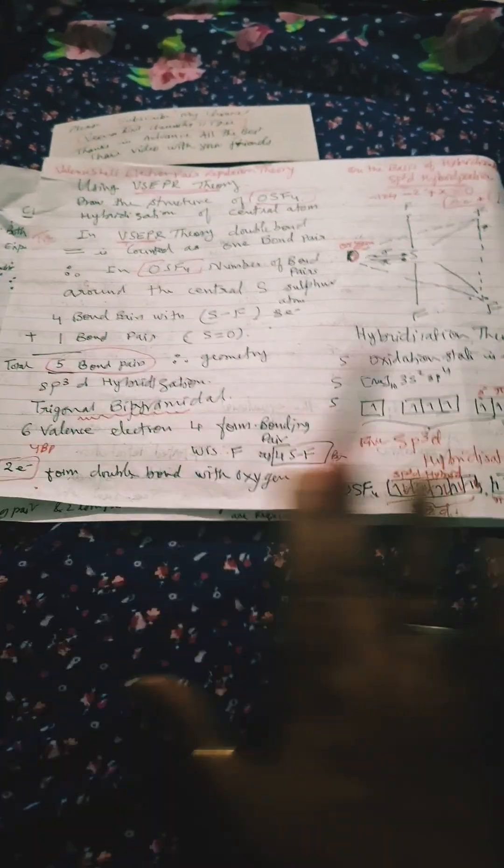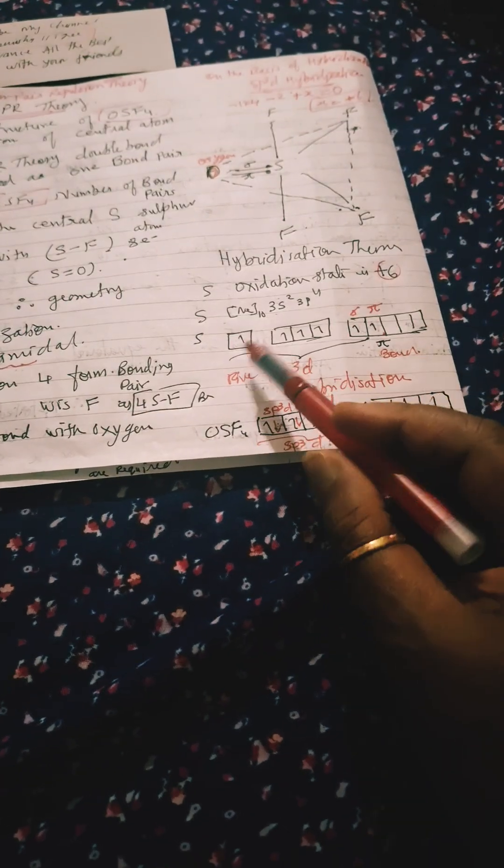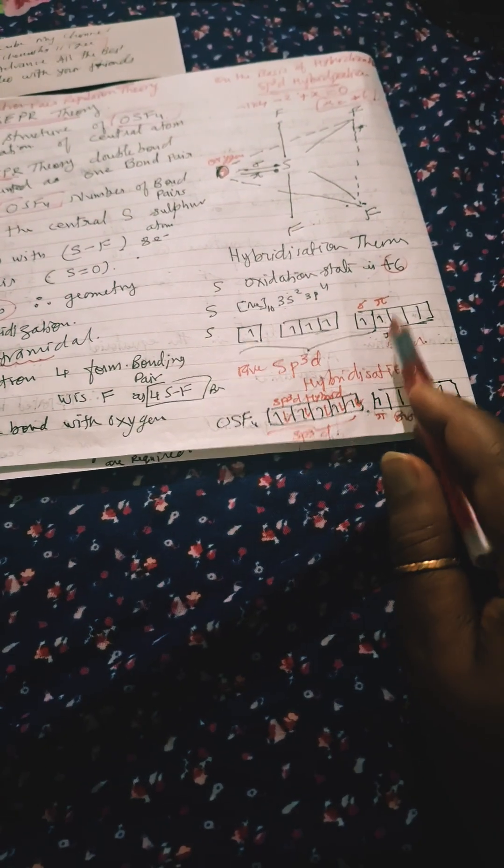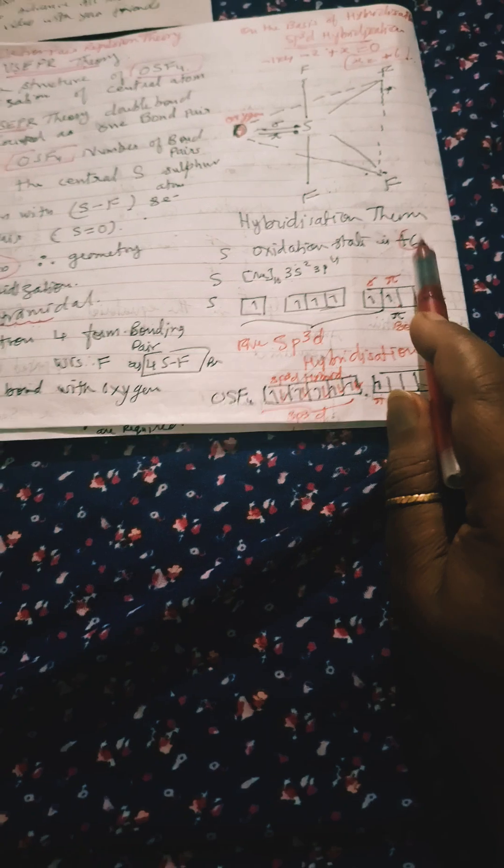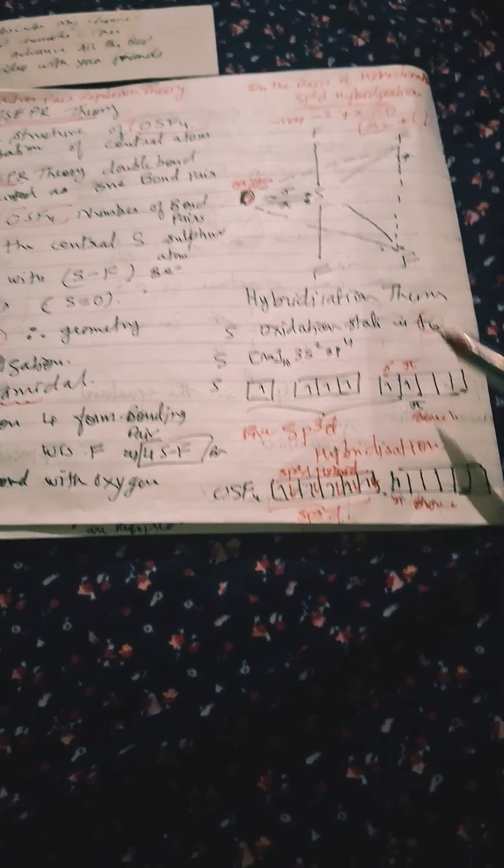This is according to VSEPR theory and this is according to hybridization. Six valence electrons are all unpaired because oxidation state is plus six, as I told you how to get it. Six unpaired electrons.